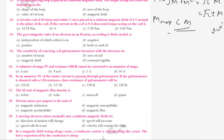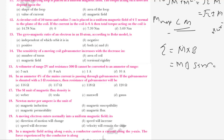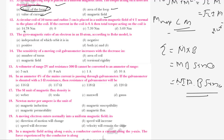Question 11: A current carrying loop is placed in a uniform magnetic field. The torque acting on it does not depend upon which property? Torque equals M cross B, that is M B sine theta, which equals N I A B sine theta. It depends on area of the loop, value of current, and magnetic field — but it does not depend on the shape of the loop. So the correct answer is shape of the loop.